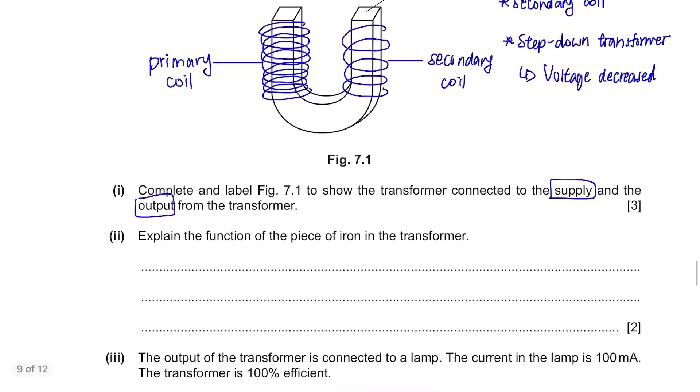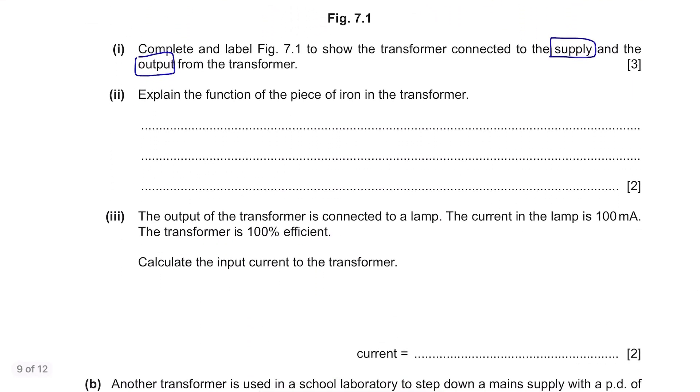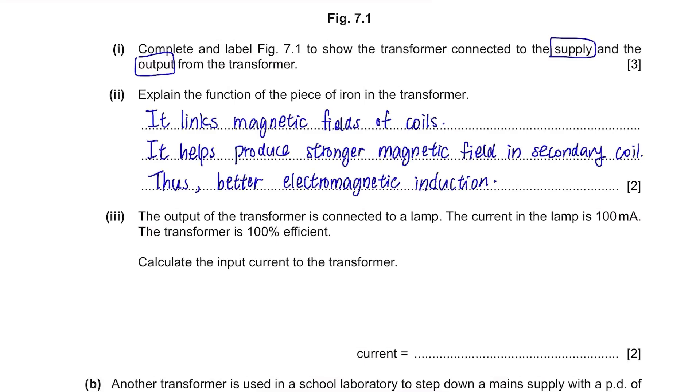Explain the function of the piece of iron in the transformer. Transformers always consist of a piece of iron where coils are wound. They are used to first of all link magnetic fields of coils. They need something to connect the fields and this iron is used. Also, it helps to produce stronger magnetic field in secondary coil because they are closely linked and as a result, there will be better electromagnetic induction.